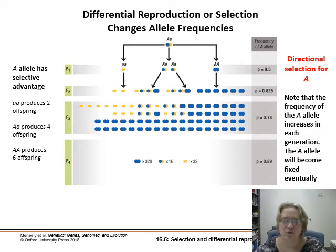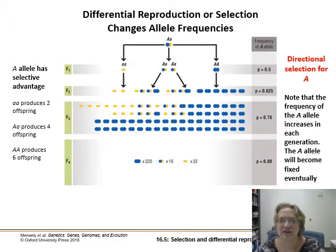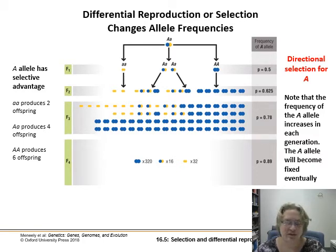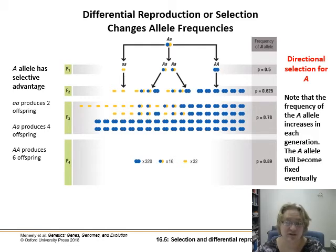Directional selection is the idea of survival of the fittest. In this case, the dominant allele A is doing really well compared to other alleles and produces more offspring overall. Something that started out as pretty even has become very skewed toward the allele giving a large advantage. Eventually, that dominant allele is probably going to become fixed.